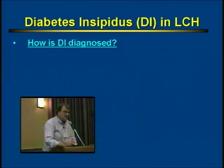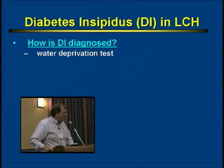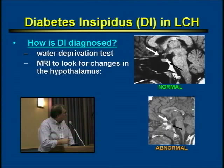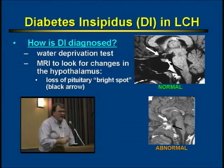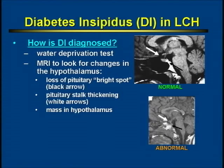If you suspect diabetes insipidus in a patient with LCH, how do you make the diagnosis? Typically, patients would have a water deprivation test, where we measure various levels of electrolytes in the body after withholding fluid from the patient, to see if the patient is able to regulate their fluid balance. Usually, patients would also have an MRI of the brain done to look for characteristic changes in the hypothalamus. The most common finding, seen in just about every patient who develops diabetes insipidus in LCH, is that the so-called bright spot in the pituitary gland is lost. Some patients may have thickening of the pituitary stalk, and occasionally a mass may be seen on MRI, but the majority of patients do not.